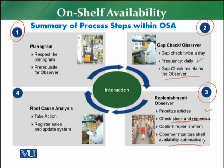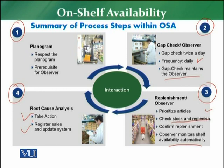The fourth part is root cause analysis. Unless you perform this analysis, you will never be able to find and solve the gap problem, and that gap will keep appearing in the business. You need to take action, register sales, and update the system. Once the root cause is identified, you know whom to contact — the supply chain manager, operations, or the buyer — to address issues like delay in delivery, late delivery, not ordering, or blocked articles.